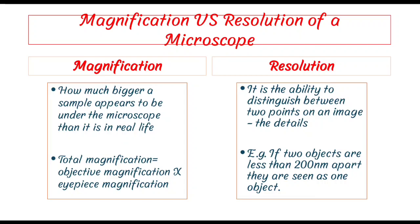So what is resolution? The resolution is the ability of the microscope which helps us to distinguish two objects in one image — separately as two objects, not as a single object.